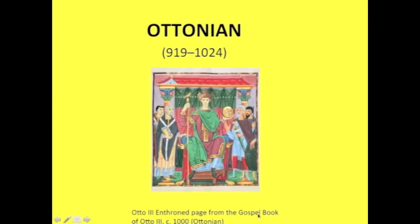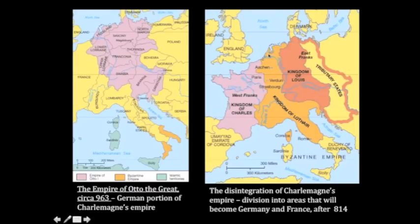There's a particular brand of Romanesque that happens in Germany, called Ottonian. The rulers of the Ottonian Empire considered themselves direct heirs to Charlemagne and Holy Roman Emperors in the same way Charlemagne did. This is Charlemagne's kingdom after the Treaty of Verdun divided it into three parts. The purple area represents more or less the extent of Otto the Great's empire in 963 — still quite extensive, not quite as extensive as Charlemagne's, but still.